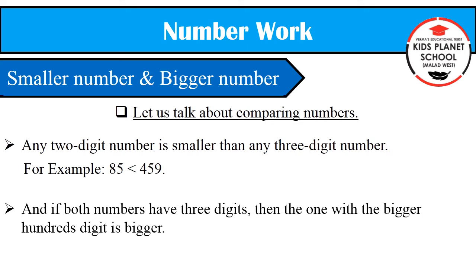And, if both numbers have three digits, then the one with the bigger hundreds digit is bigger. For example, here 782 and 563, both are three digit numbers. So, to find which number is bigger and which number is smaller, we will compare the digits which are at the hundreds place in both the numbers. In 782, 7 is at the hundreds place. And in 563, 5 is at the hundreds place. Which is the bigger number, 7 or 5? Yes, 7. So, it means 782 is the bigger number.